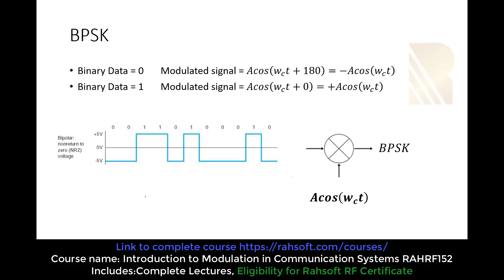So what is going on? When we send binary data zero, we send the modulated signal as A cosine(ω_c t + 180°), or plus π — which we can write as minus A cosine(ω_c t). So the amplitude is not changing; the phase changes. We send it with a 180-degree phase shift, and that negativity is because of that sign. This is for BPSK — we have two levels. In the second level, when the data is one, the modulated signal is A cosine(ω_c t + 0), with zero phase shift, so it remains the same. That's why we write minus A cosine for zero and A cosine for one — the real scenario is a phase difference.